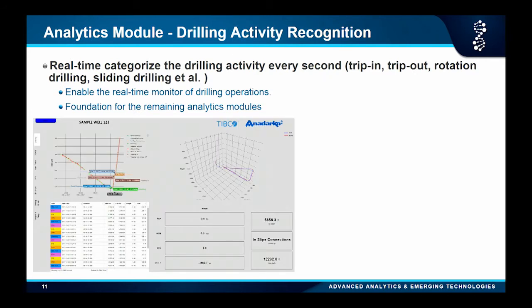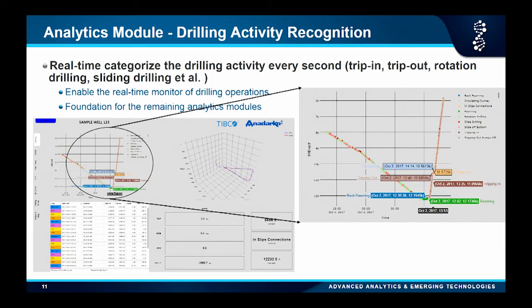The first module is a basic one. Every second we have data coming in, and we have rules to identify what the rig is doing at that moment — whether it's tripping in, tripping out, rotary drilling, or sliding drilling. So every second we know what the rig is doing. It's like right now all of you are sitting here listening. This drilling activity identification is the base for all other modules.